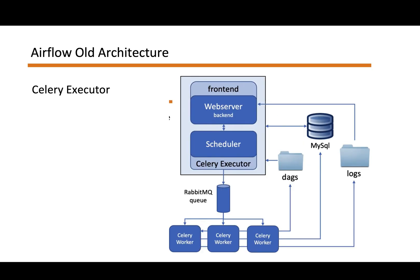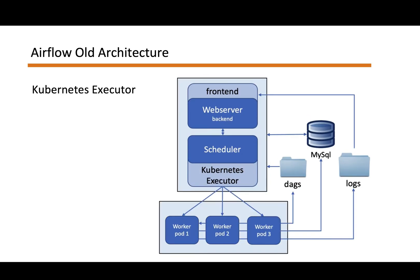And if you look at the Celery executor, the architecture is quite similar. The difference is just the way the executor runs the workflow — in this case through Celery workers using RabbitMQ. Looking at the Kubernetes executor, it's again similar — it runs these workers on a separate pod in Kubernetes.